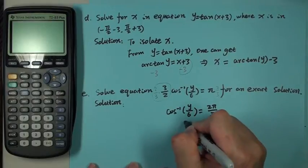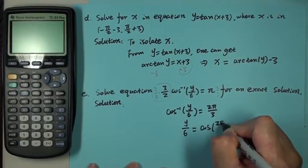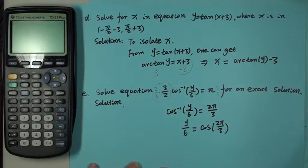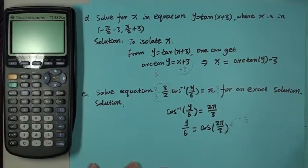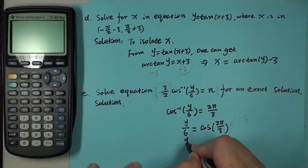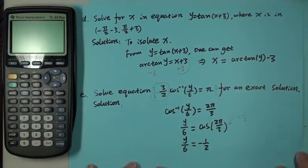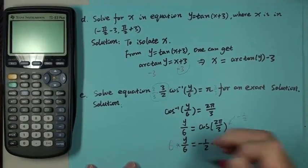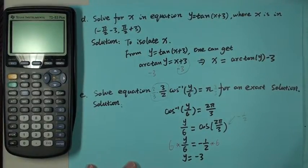And then by definition, y over 6 is cosine 2π over 3. Cosine 2π over 3 is 120 degrees. This value is negative 1 half. Since this is negative 1 half, we then have y over 6 equals negative 1 half. Both sides multiplied by 6. We then have value y, which is negative 3. I'll see you next time.